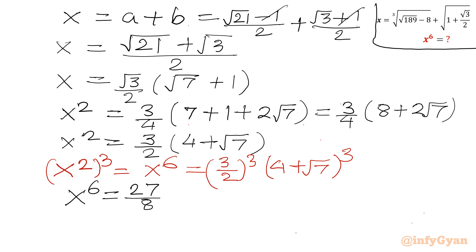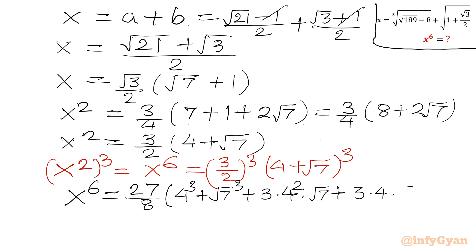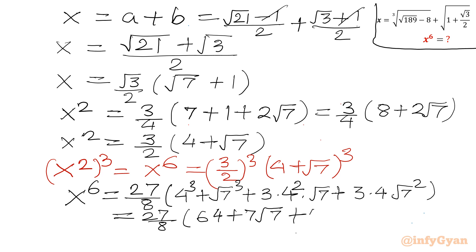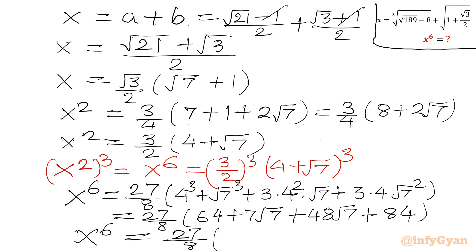So x power 6 equals 27 over 8 times (4 plus root 7) cubed. Applying the (a plus b) cubed formula: 4 cubed plus (root 7) cubed plus 3 times 4 squared times root 7 plus 3 times 4 times (root 7) squared gives 64 plus 7 root 7 plus 48 root 7 plus 84. Combining: 27 over 8 times (148 plus 55 root 7). So x power 6 equals 27(148 plus 55 root 7) divided by 8.